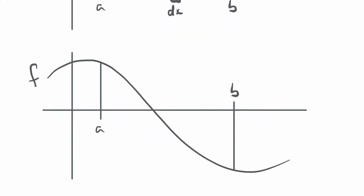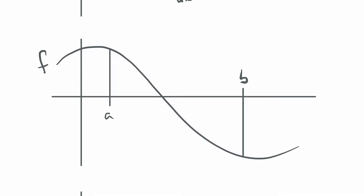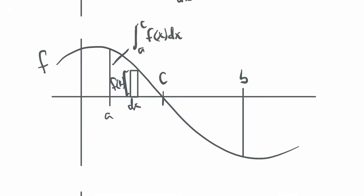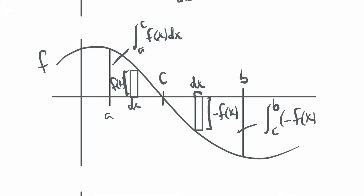What if we have a function that dips below the x-axis for part of its interval? There's some place where the graph crosses the x-axis. On the left side, the height is f of x and width is dx, so that area is the integral from A to C of f of x dx. But where the graph dips below the x-axis, the heights are negative f of x, so that area is the integral from C to B of negative f of x dx.